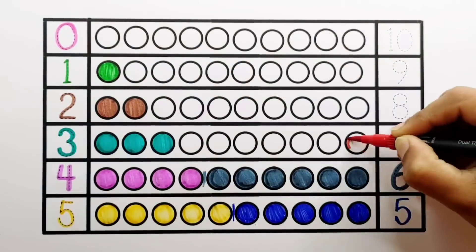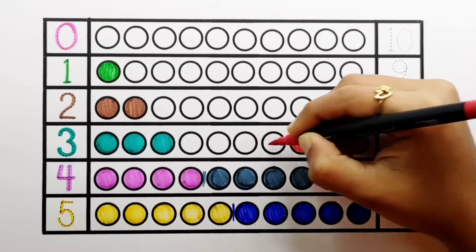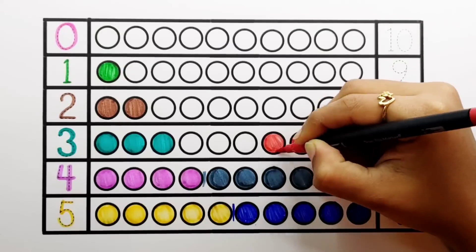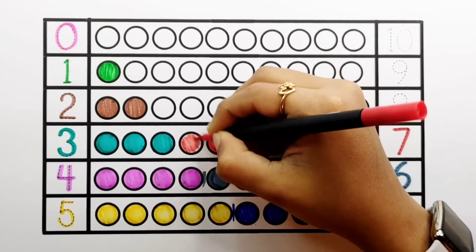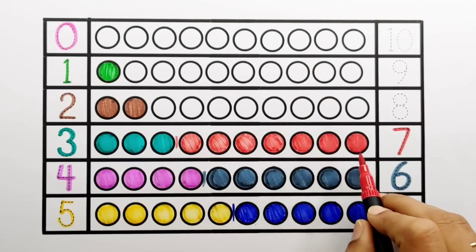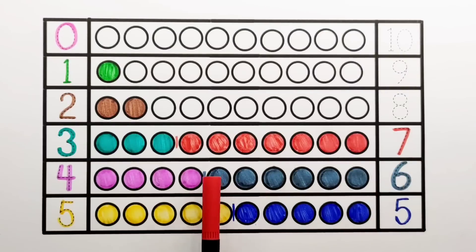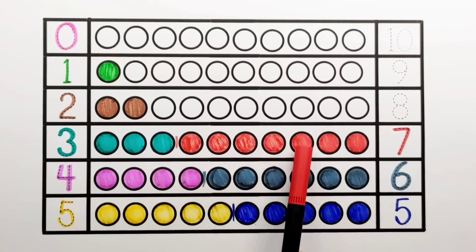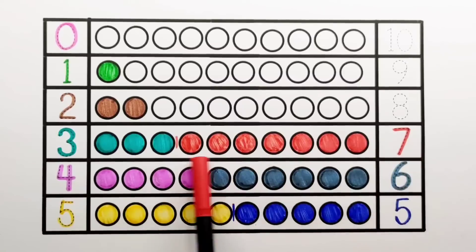Number 7. 1, 2, 3, 4, 5, 6, 7 — 7 balls. 3 plus 7 makes 10. 1, 2, 3, 4, 5, 6, 7, 8, 9, 10. 3 plus 7 equals 10.